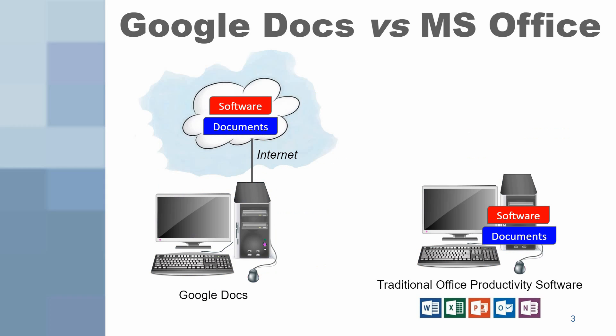There are advantages in having your software and documents in the cloud as opposed to on your local computer. You don't have to worry about software upgrades when the software is in the cloud — the software sponsor, in this case Google, takes care of that. To collaborate on a document, you don't have to email the document around and track the changes and comments that everyone makes. Everyone can view, comment on, and even change the same document in the cloud. If you allow it, the document that you create can be accessed by anyone with an Internet connection, so it is easier to collaborate.